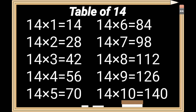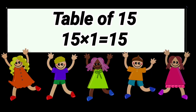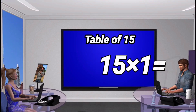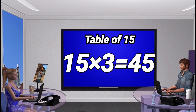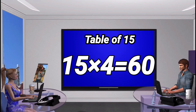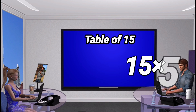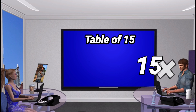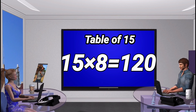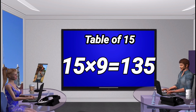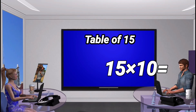Table of 15. 15 times 1 is 15. 15 times 2 is 30. 15 times 3 is 45. 15 times 4 is 60. 15 times 5 is 75. 15 times 6 is 90. 15 times 7 is 105. 15 times 8 is 120. 15 times 9 is 135. 15 times 10 is 150.